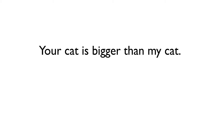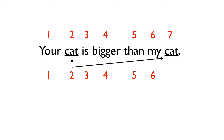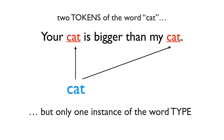Consider the sentence on the screen: 'Your cat is bigger than my cat.' How many words are in that sentence? The question is ambiguous. If you count each occurrence of a word, you get seven. But the word 'cat' appears twice, and that's the same word. So in another sense, there are only six distinct words. We remove the ambiguity by specifying whether we're asking for word tokens — each individual occurrence — or word types. There are two tokens of the word 'cat,' but only one instance of the word type.